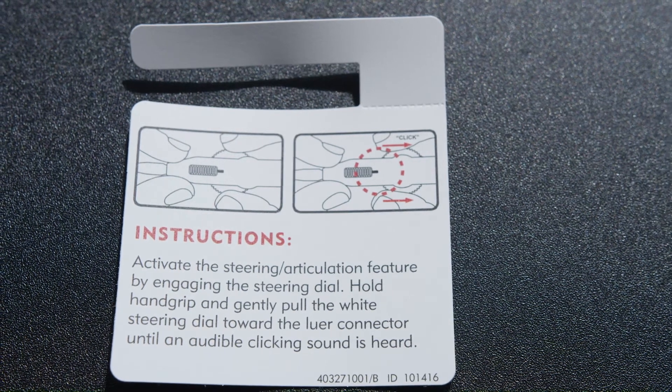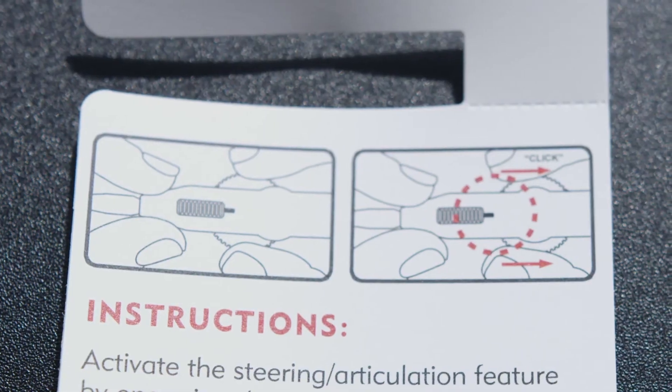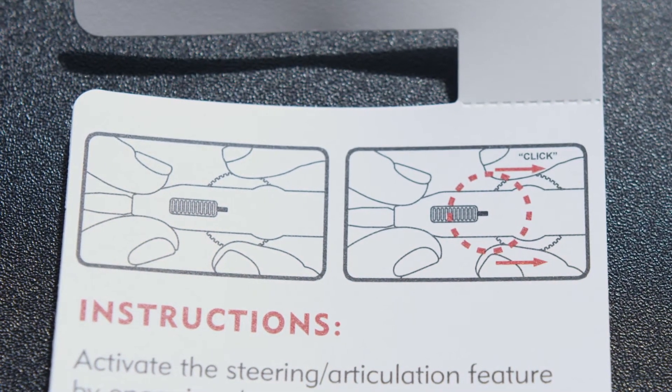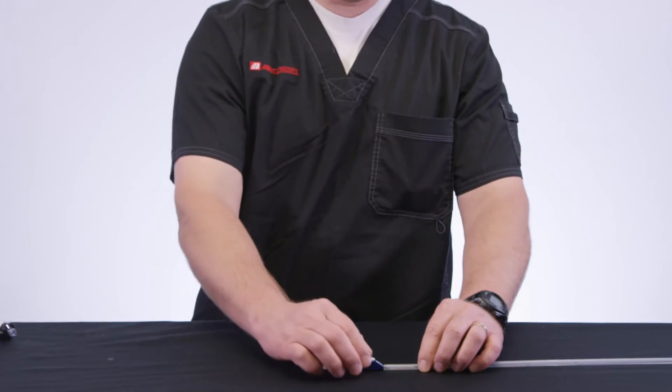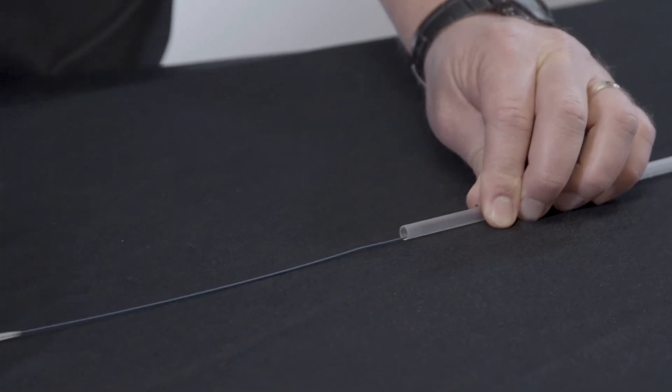The information card we removed prior to engaging the steering dial is not just packaging. It is very important as it shows how to engage the steering dial. Once the steering dial is engaged, remove the Swift Ninja from the holder by pulling it straight out of the holder.